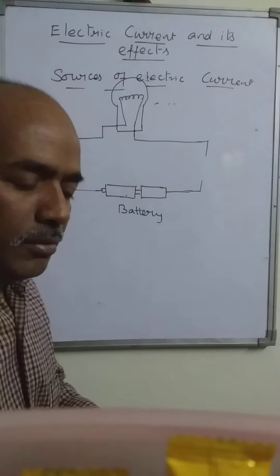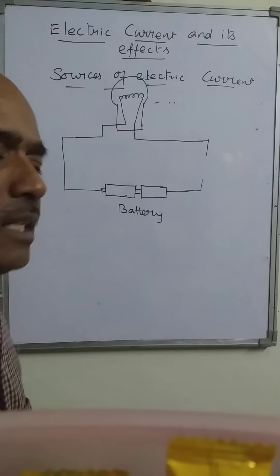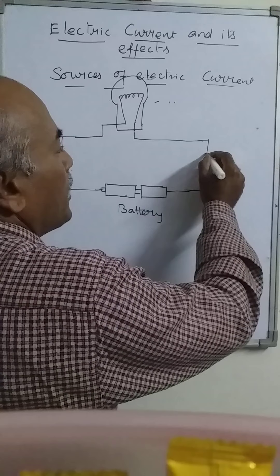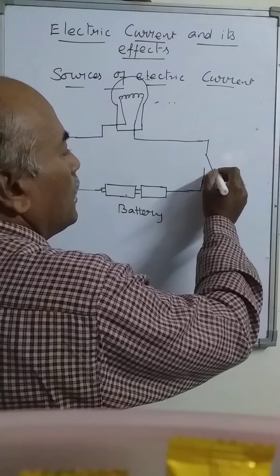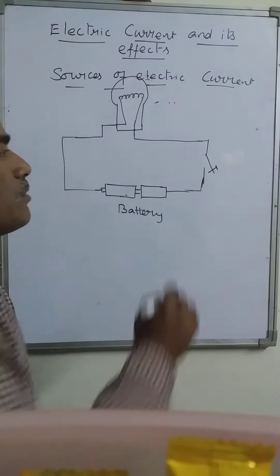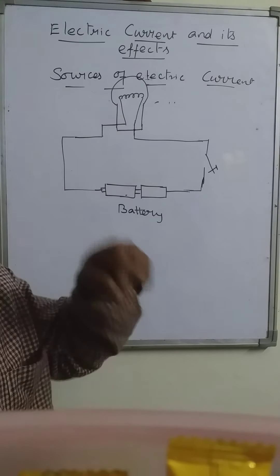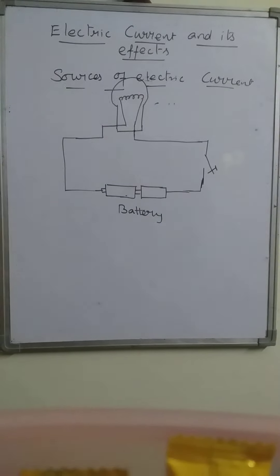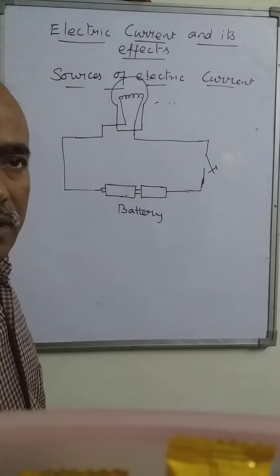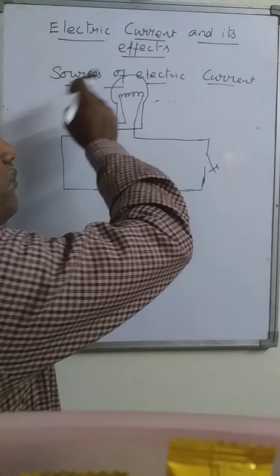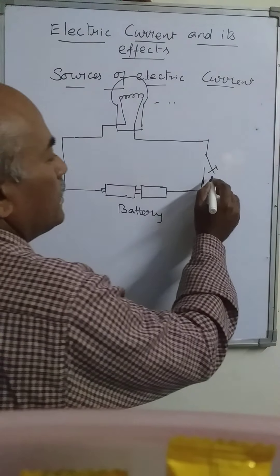Switches also come in various kinds. Here we are using one type of switch — a press switch. If we press it, it will come in contact and then the current flows. So this is the switch.